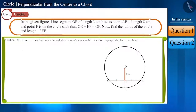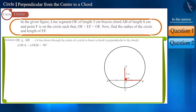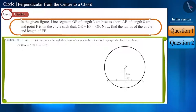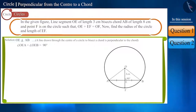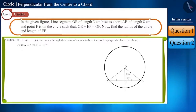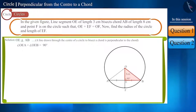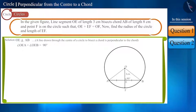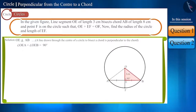Therefore, angle OEA and angle OEB will be 90 degrees. If we join O with point A and point B, then we get the radii of the circle OA and OB, and the two right angle triangles OEA and OEB. OA and OB are the hypotenuse of right angle triangles OEA and OEB respectively.